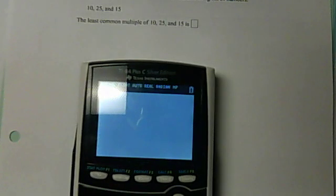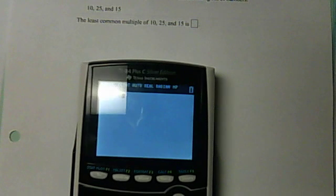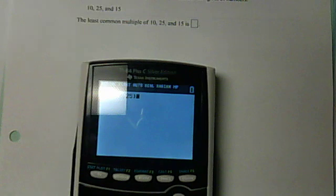I'm going to clear my calculator. So the first thing I'm going to do are the first two numbers. Math, go over to num, hit number 8, and I'm going to do 10, comma, 25. Close that. Hit enter. Once I hit enter, I get 50.